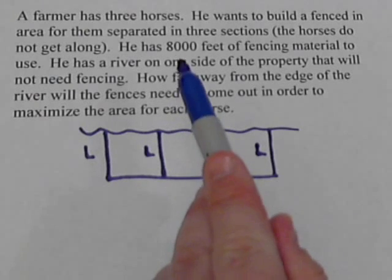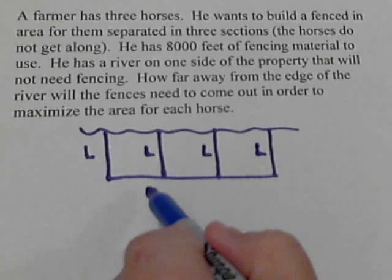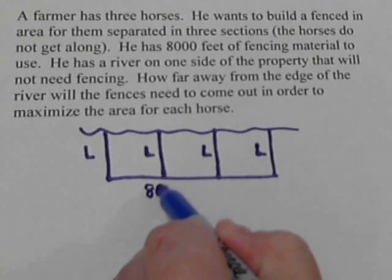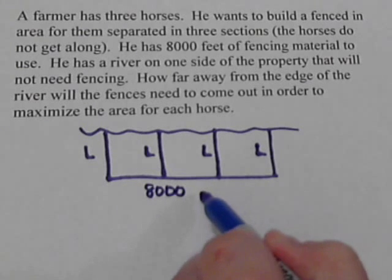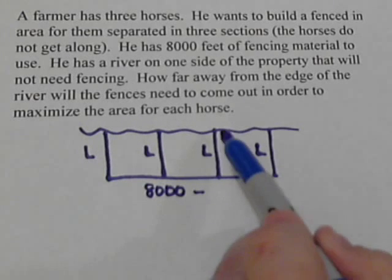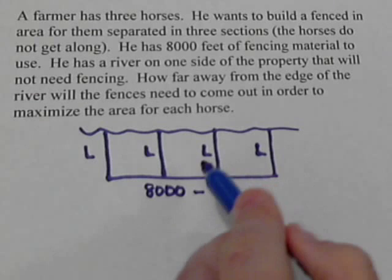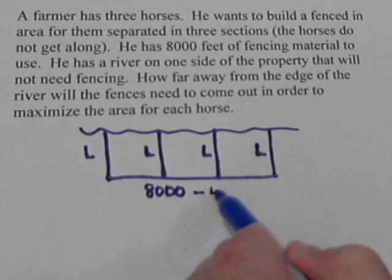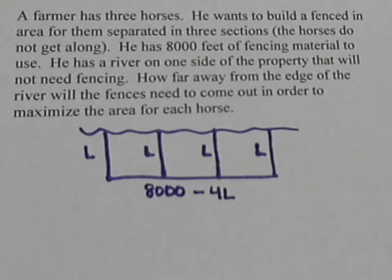Well, we know we've got 8,000 feet of fencing total. So let's start out with all 8,000 feet of fence that we can put there. Except we used a lot of fence here. We have four sections that we called L. So we're going to take that 4L away.